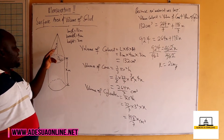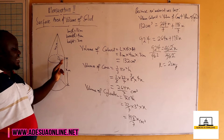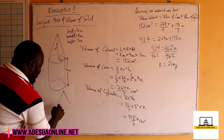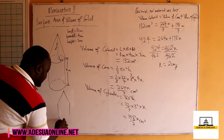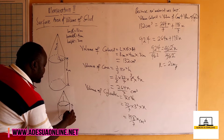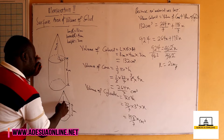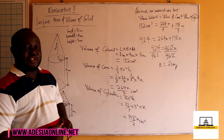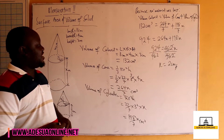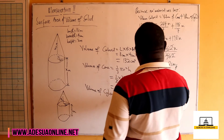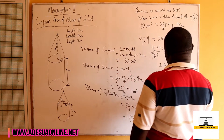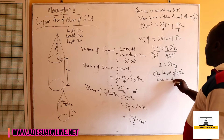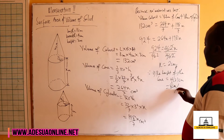Since x equals 2, the height of the cone becomes 4 times 2, which is 8 centimeters. The height of the cylinder becomes x, which is 2 centimeters. In the updated diagram, the cylinder has height 2 centimeters, radius 3 centimeters, and the cone has height 8 centimeters. Therefore, the height of the cone is 4 times 2, which equals 8 centimeters.